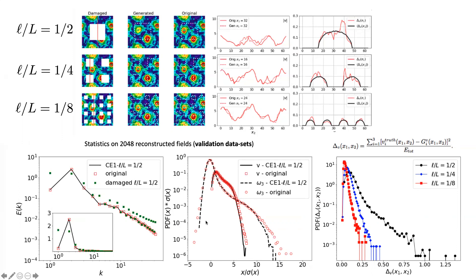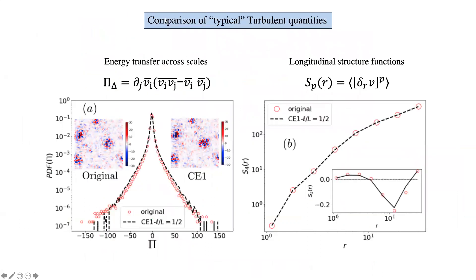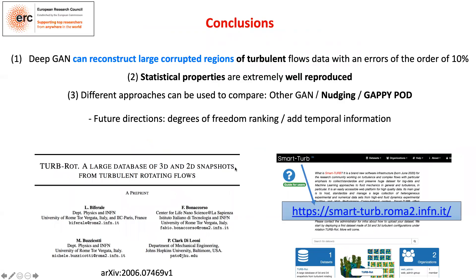We can discuss further during the conference, including comparison of other typical turbulent quantities such as the energy transfer across scales or the longitudinal structure functions — all quantities that are highly non-linear in terms of the reconstructed velocities — and the results are very promising. To conclude, we have done quantitative measurements of the quality of reconstruction produced by the generative adversarial network on very complex flows, and we have seen that these results reproduce the missing information with quality that is better than or at least comparable with all other tools known in the literature. Thank you very much for listening, and I look forward to meeting you during the conference.